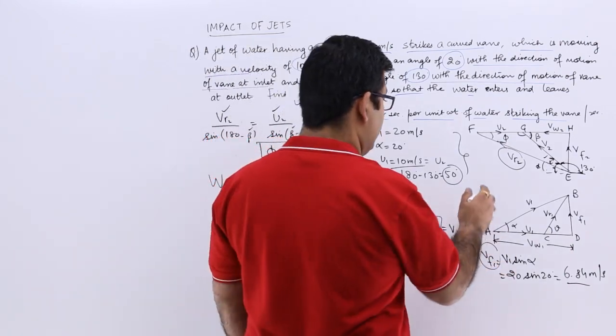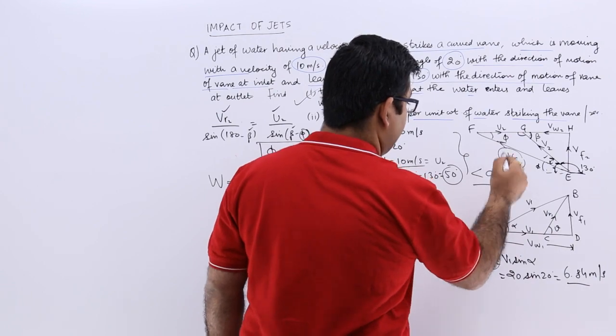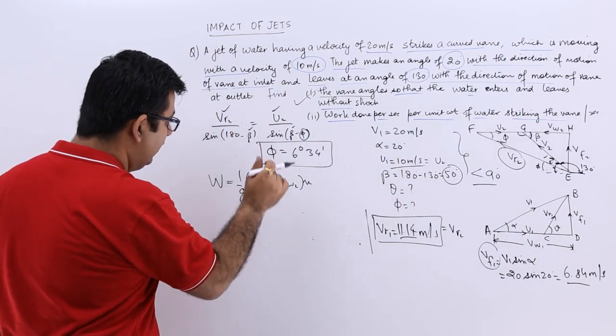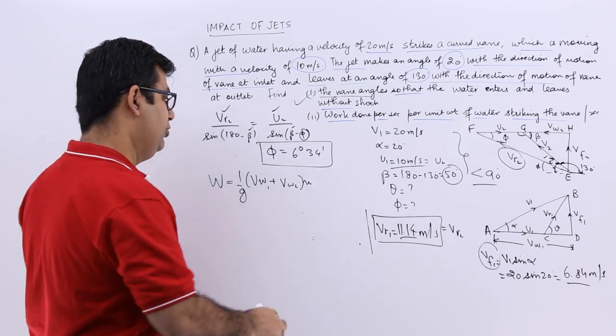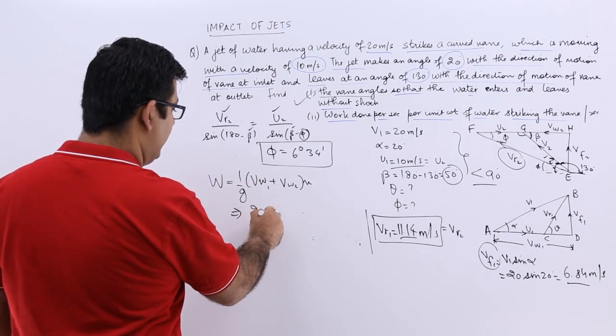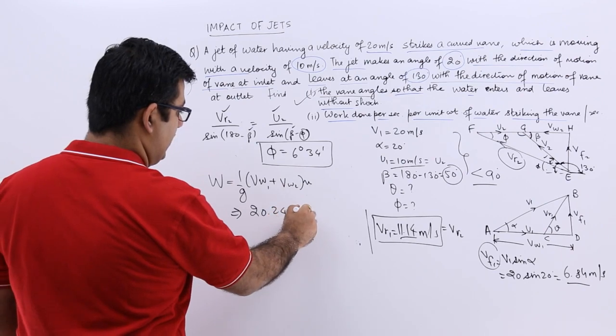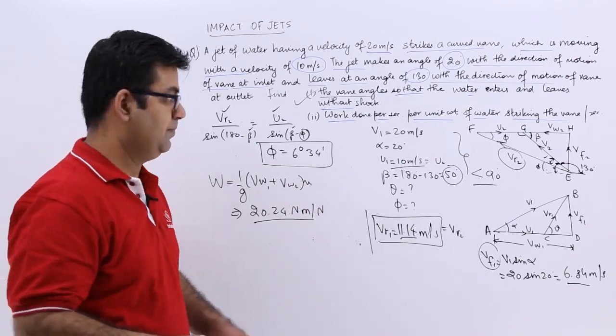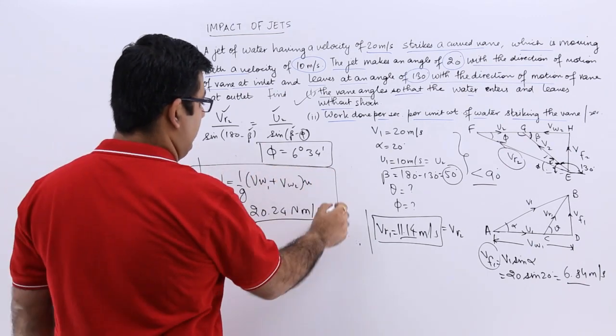It will be plus because this is less than 90, that is an acute angle. So I will not be using minus over here. So when you put in the values, you will get 20.24 Nm per N of work done. So this is the second part of the question.